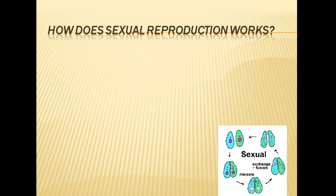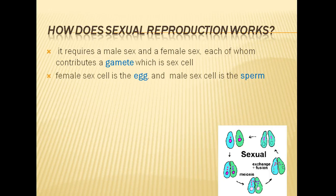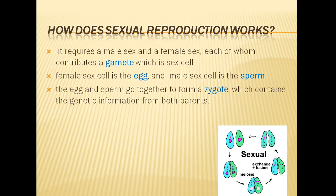How does sexual reproduction work? It requires a male sex and a female sex, each of whom contributes a gamete, which is a sex cell. The female sex cell is an egg and the male sex cell is a sperm. They come together to form a zygote, which contains the genetic information from both parents.